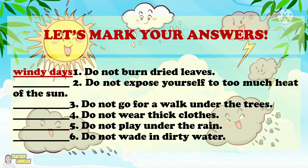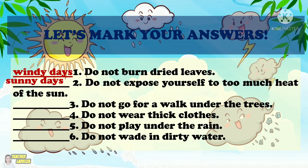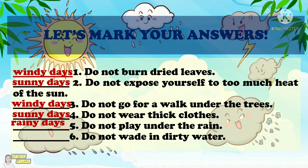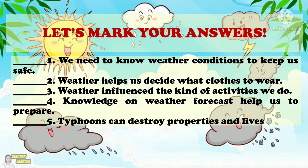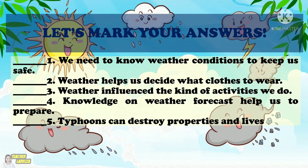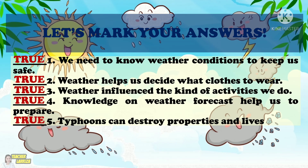Now let us mark your answers. For Activity 1: Number 2 — sunny days. Number 3 — windy days. Number 4 — sunny days. Number 5 — rainy days. Number 6 — rainy days. For Activity 2: Number 1 — true. Number 2 — true. Number 3 — true. Number 4 — true. Number 5 — true.